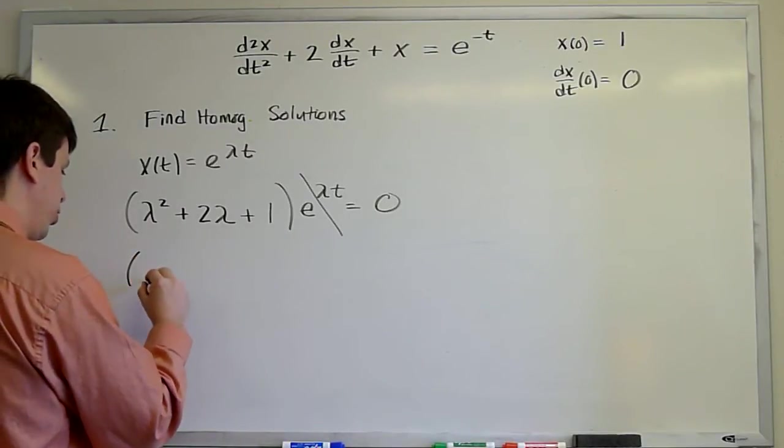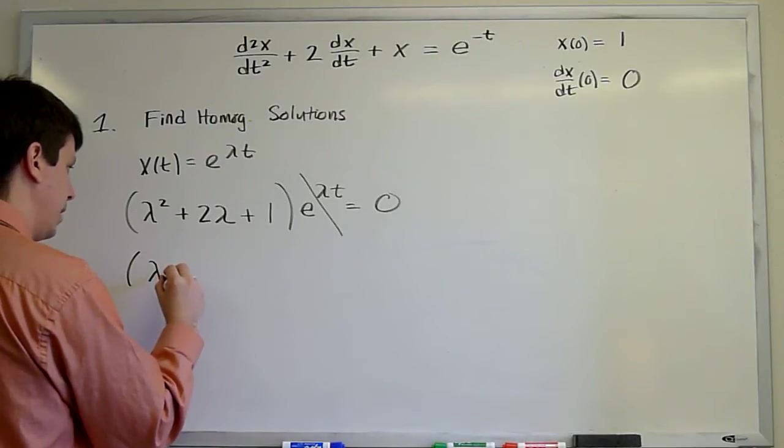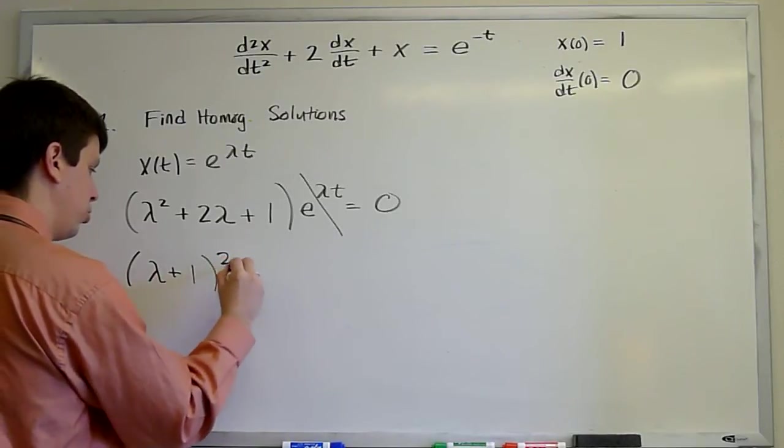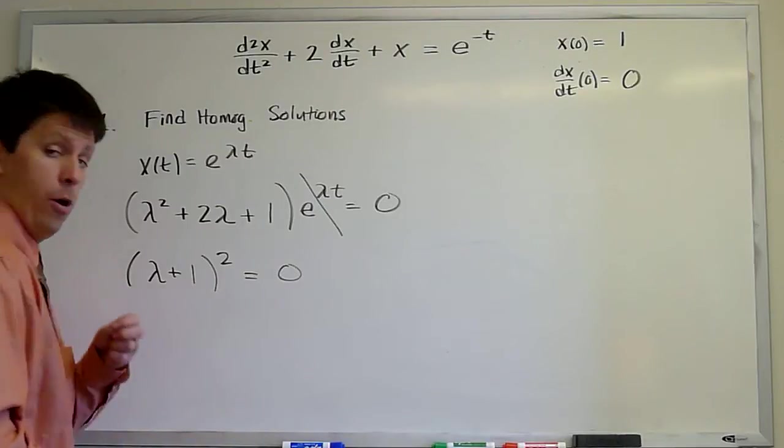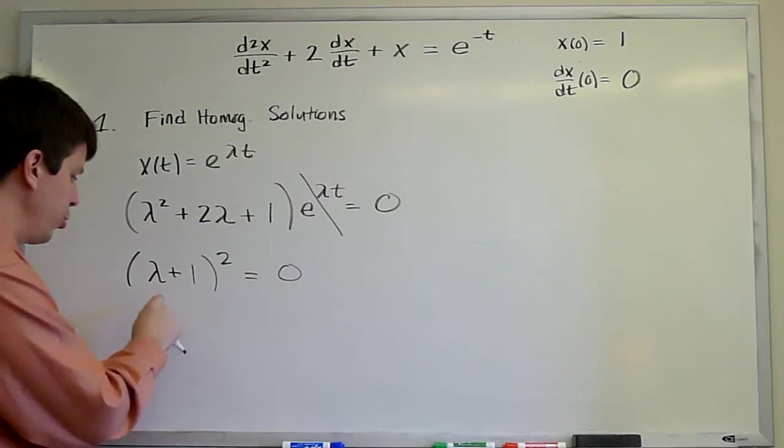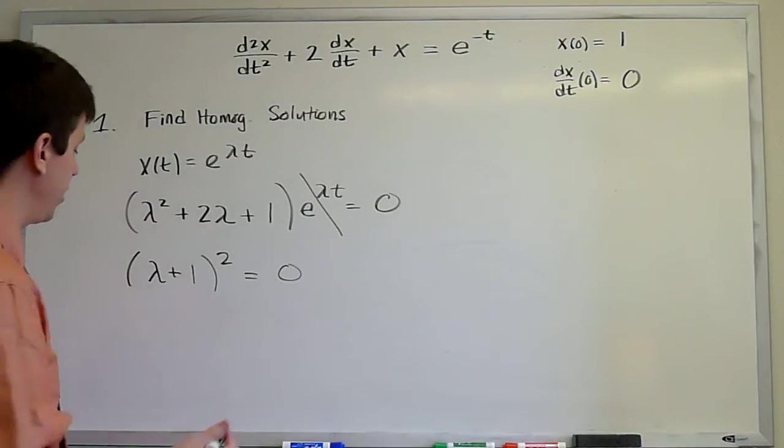This is a very simple characteristic equation. It can be factored lambda plus 1 squared equals zero. And so we have a double root lambda equals minus 1.